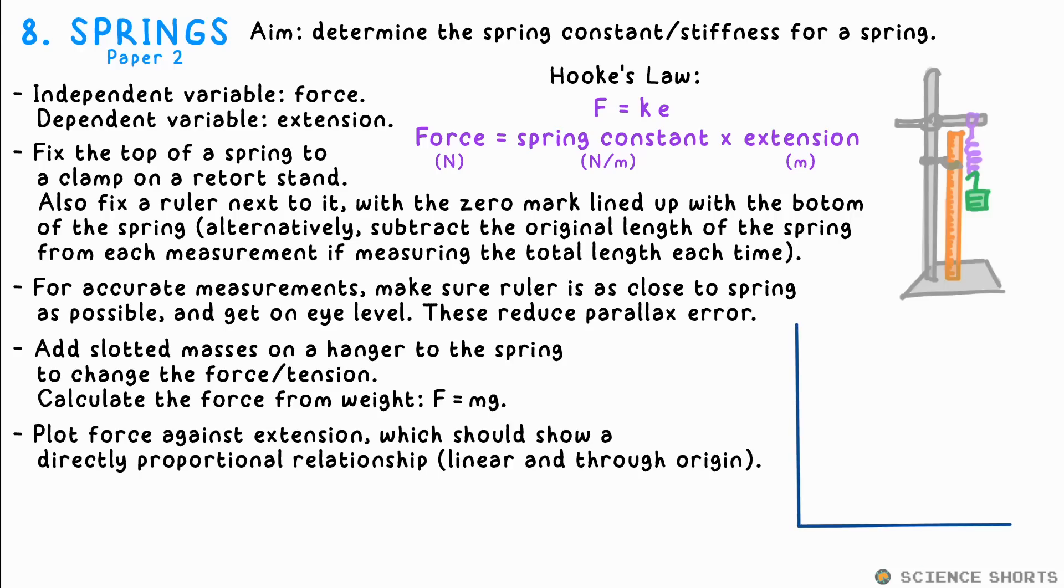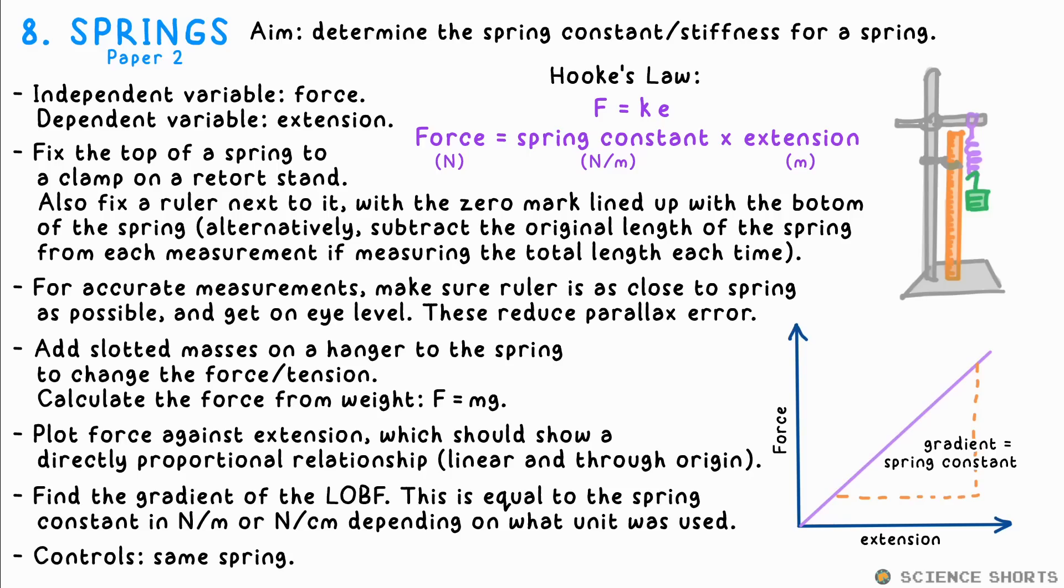Plot this against extension, even though you might think the axis should be the other way round, it makes it such that the gradient of the line gives you the spring constant in newtons per metre, or newtons per centimetre if you kept your extensions in centimetres. This is where Hooke's law, F equals KE, comes from, where K is the spring constant. This should be a straight line that goes through the origin, showing that this is a directly proportional relationship.